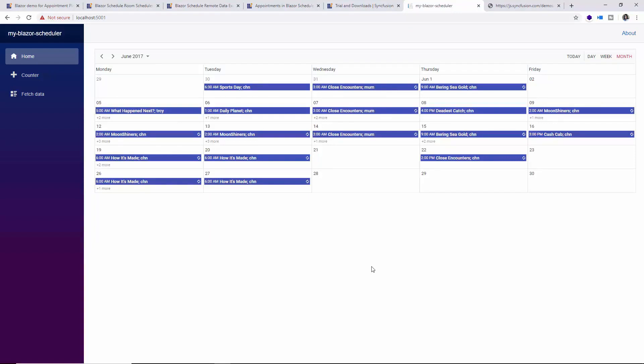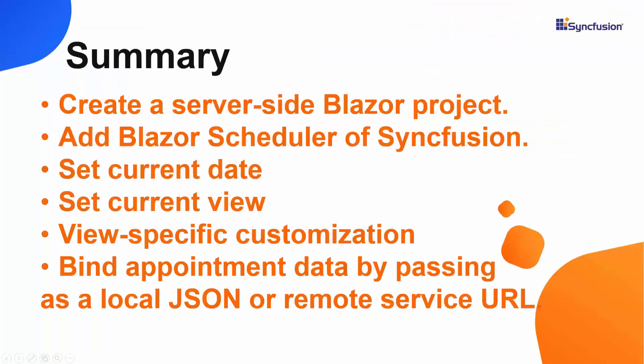That covers the basic features you need to know when starting to work with the Blazor scheduler of Syncfusion. We have seen the steps to create a Blazor server app project, import the Syncfusion Blazor assemblies, add a Blazor scheduler component, and bind both local and remote appointment data. You can download this featured example from the link in the description below. If you find this video useful, click the like button and subscribe to our channel. Thank you for watching.